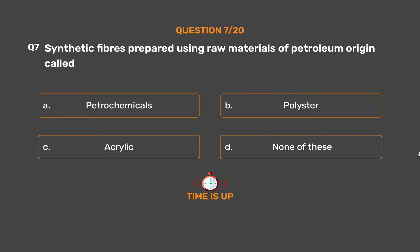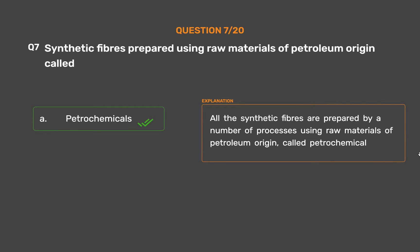The correct answer is Option A: Petrochemicals. All synthetic fibers are prepared by a number of processes using raw materials of petroleum origin called petrochemicals.